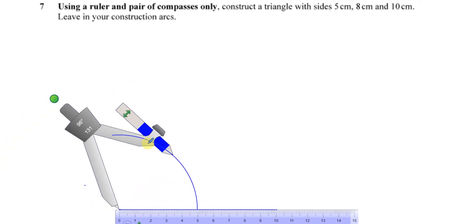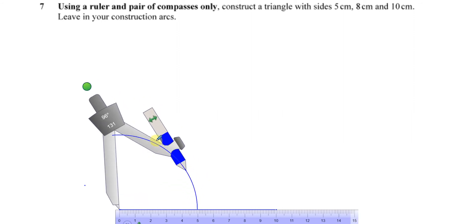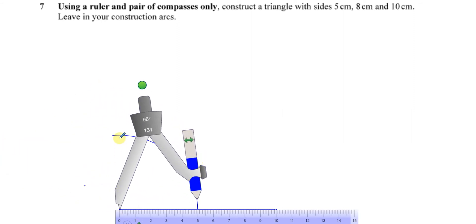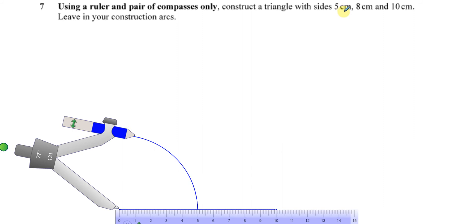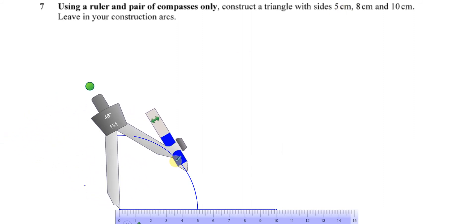I know that somewhere along this arc lies the end of the line, which is 5 centimeters from this point. So from this point to every point along this arc is 5 centimeters. So this side of 5 centimeters can be anywhere along this particular line.